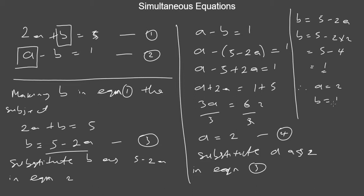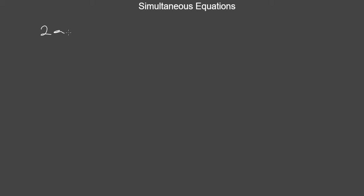Let's now look at how to solve this using elimination method. We have 2a plus b equals 5 and a minus b equals 1. Using elimination method involves eliminating one of the variables so you are left with one, then solving for that one. This is equation 1 and this is equation 2. The first thing you want to decide is which variable to eliminate.